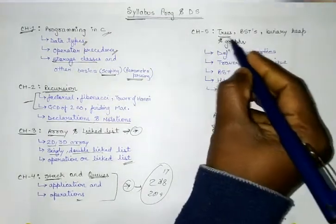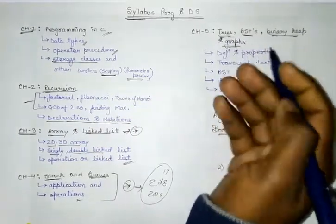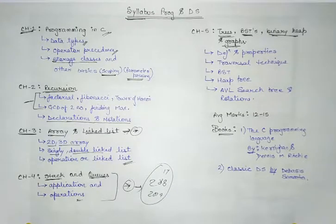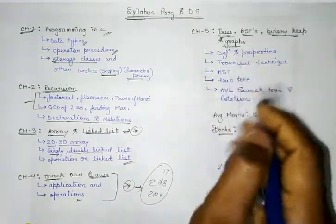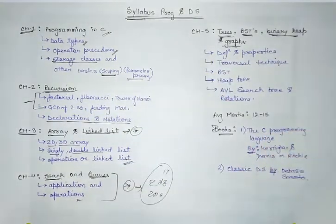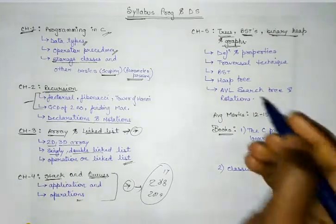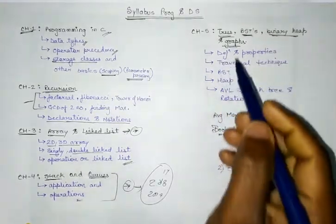So next thing will be trees, BST, binary heap and graph. Most of the things I will be discussing in the algorithm as well. If you want to look for the algorithm videos, you can just go to my playlist and I have uploaded several videos for algorithm as well. So you can just go and check out those videos. I haven't uploaded this particular section for this heap and trees, but you will be getting the videos regarding the heap sort, other sorting algorithms. So basically the divide and conquer part in algorithm has been covered, and the rest of the part I will be covering soon.